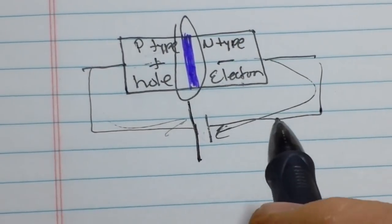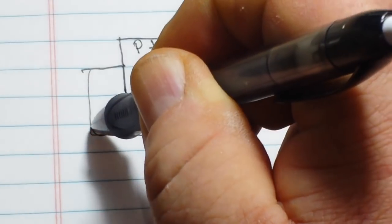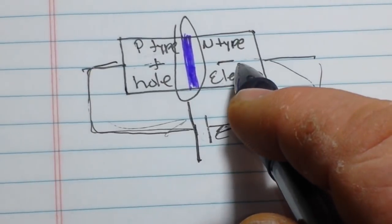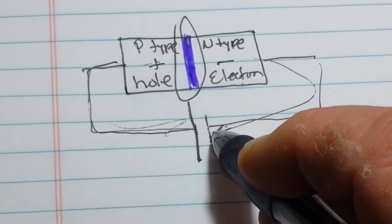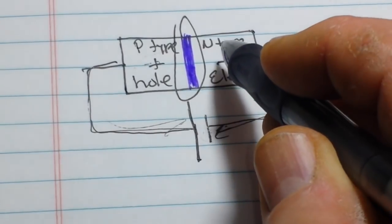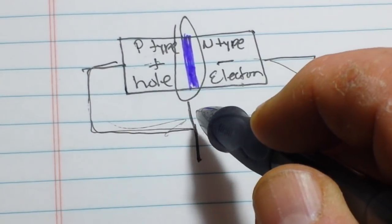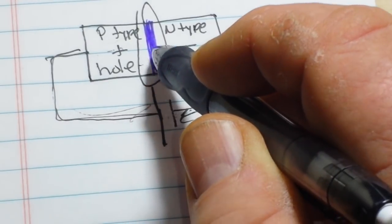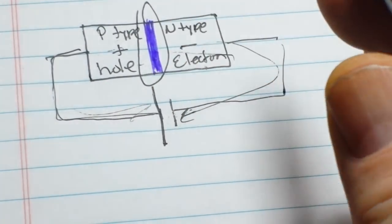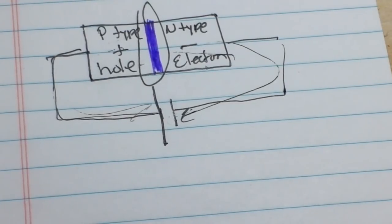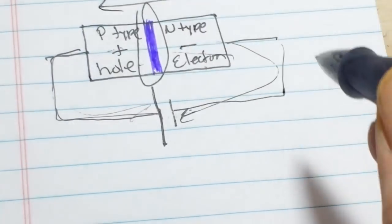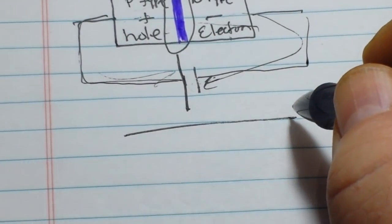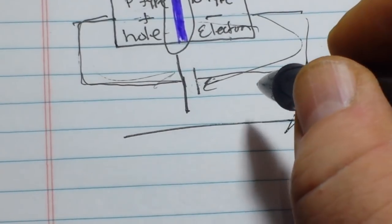However, if we switch it around and put our positive terminal here, well, now we've got something. The free electrons in the N-type are repelled by the negative side of the battery. And the holes in the P-type are repelled by the positive side of the battery. The electrons will fill the holes. The free electrons cease to exist. New holes spring up. New electrons take their place. And just like that, whoop, I drew my arrow the wrong way. Pretend you didn't see that. And just like that, current flows.